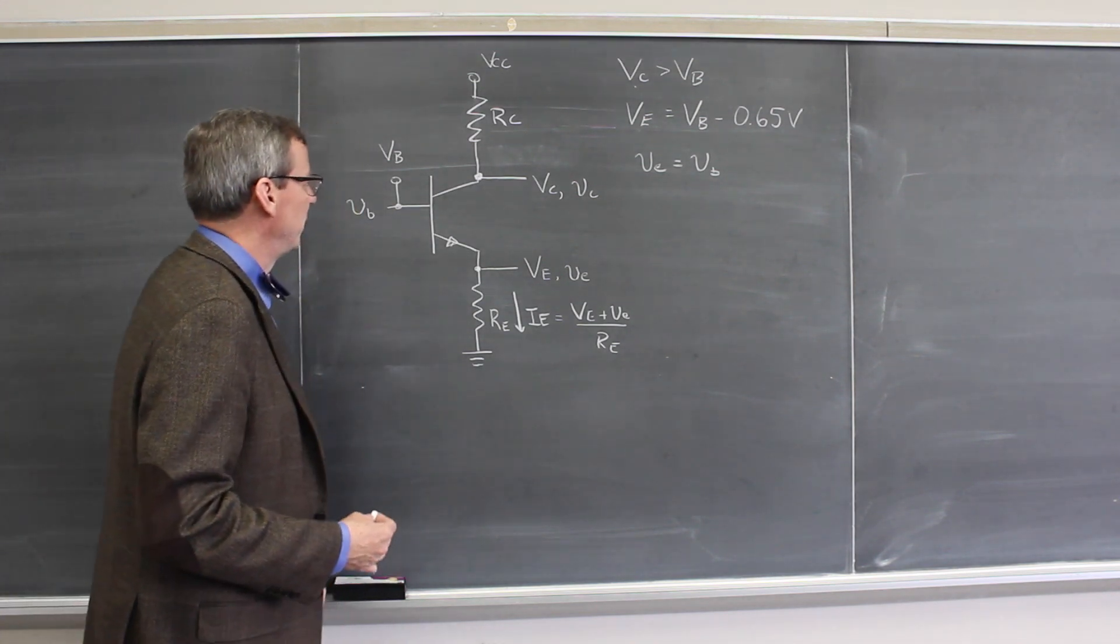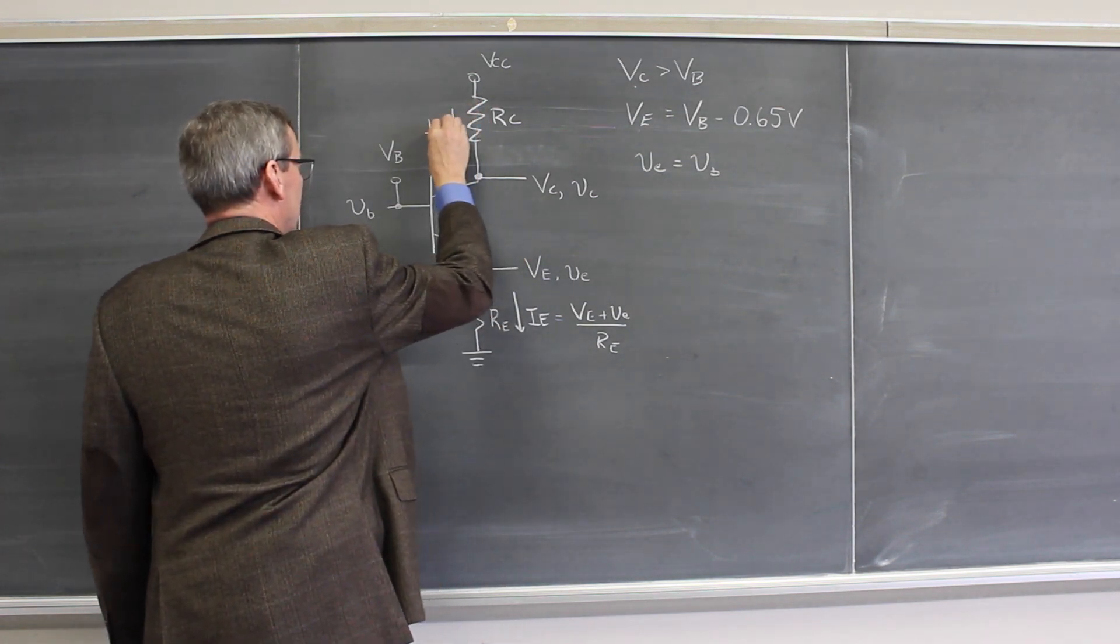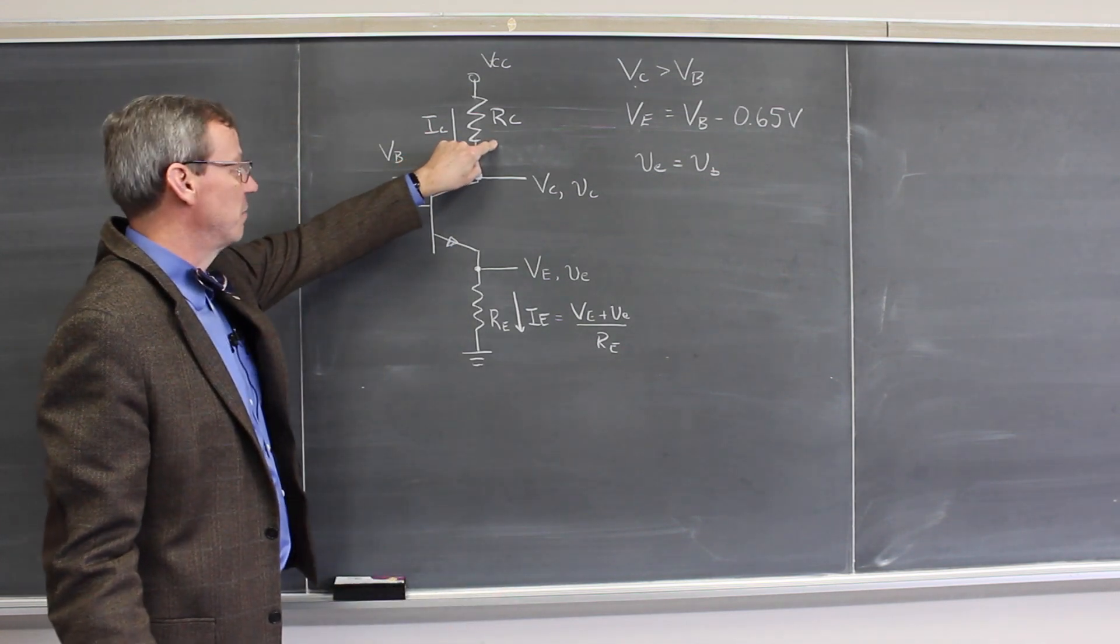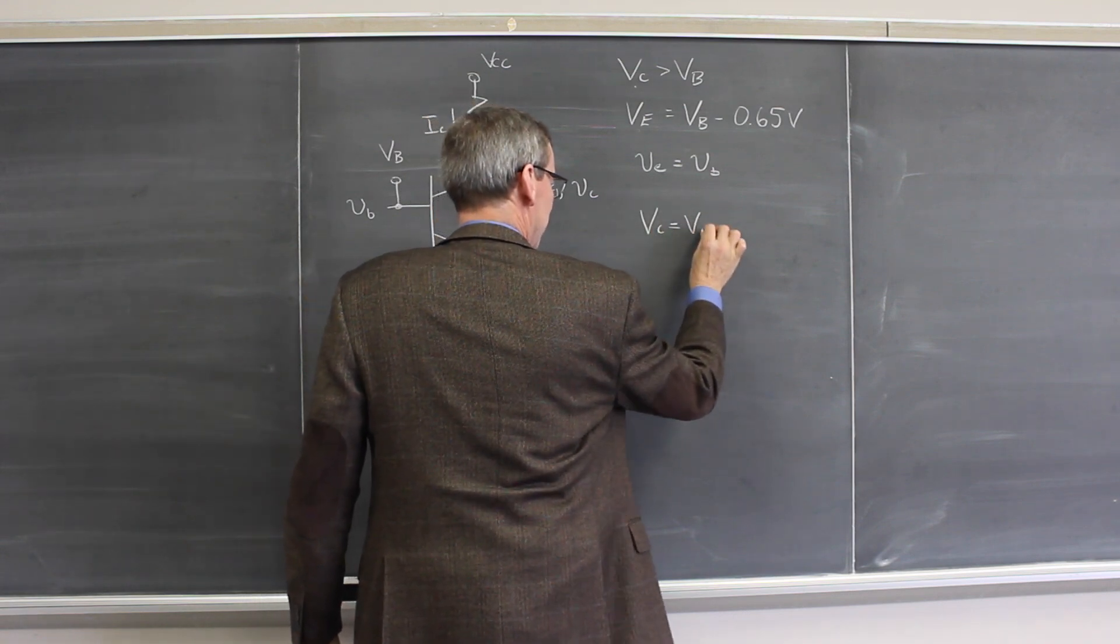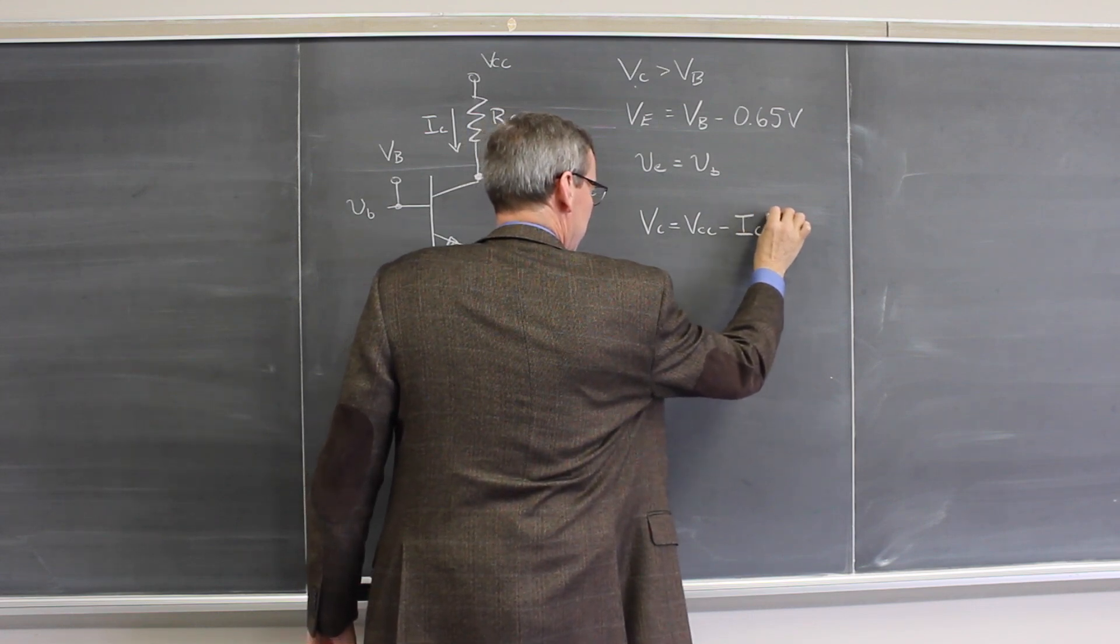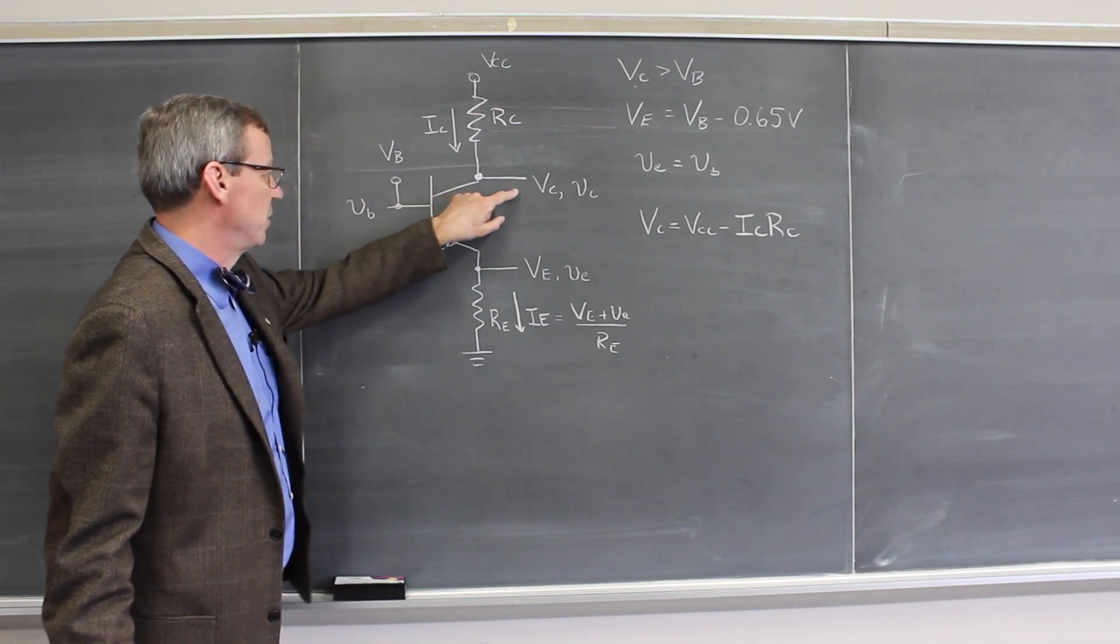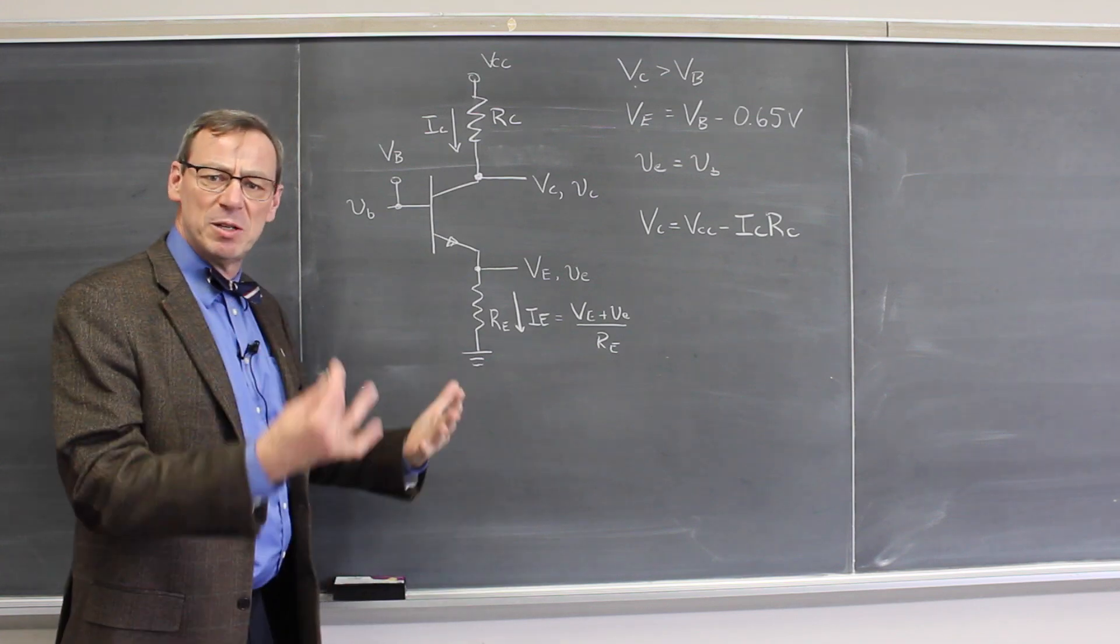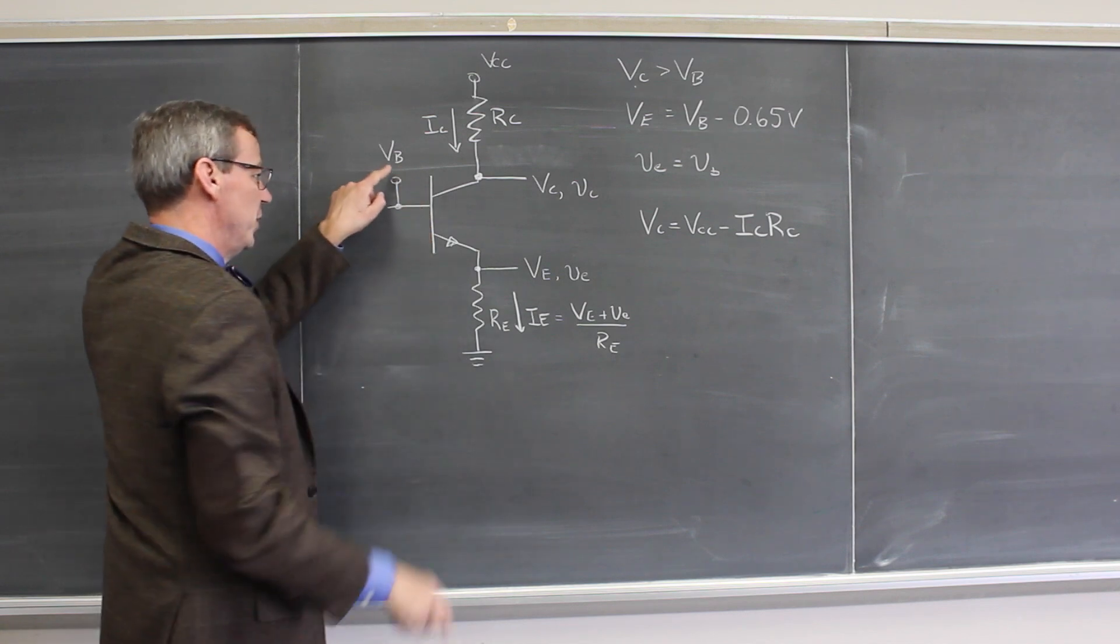We can simply write down here the collector voltage is whatever current is flowing through that resistor times that resistor is the voltage drop, so the DC collector current has to be VCC minus ICRC. So that's the DC level there. This is lower than the collector voltage by whatever the current flowing through there is. And to keep the transistor biased, this collector voltage still has to be bigger than the base voltage that would bias.